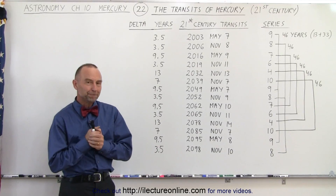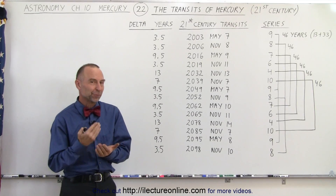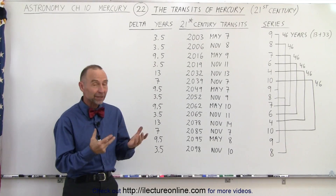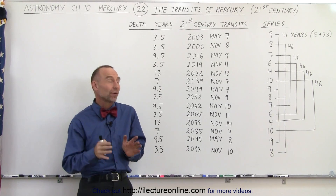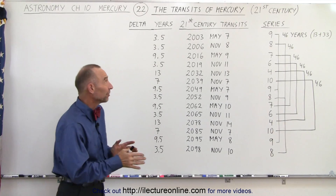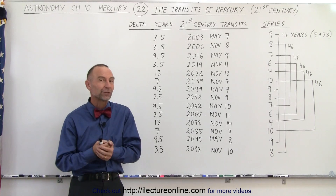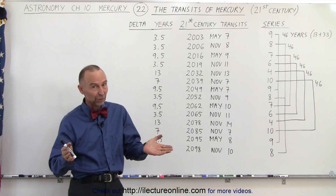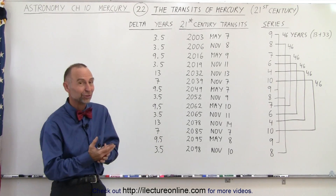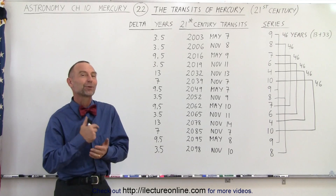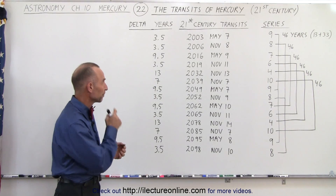Welcome to my lecture online. To understand the transits of Mercury a little bit better, let's take a look at all 14 of the transits that either have occurred or will occur in the 21st century. In this century, we're blessed with one additional Mercury transit compared to what we normally get in a century.